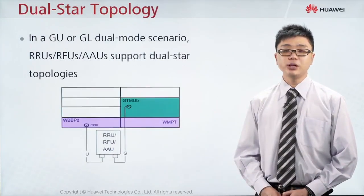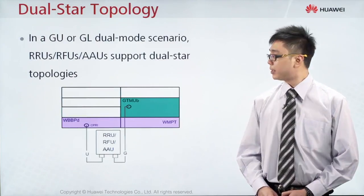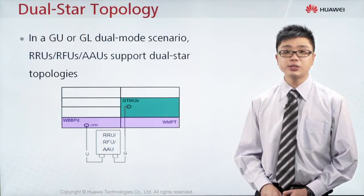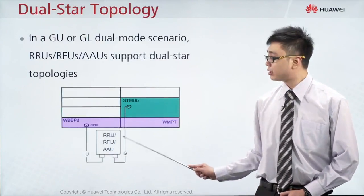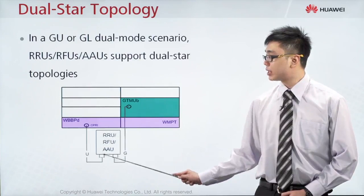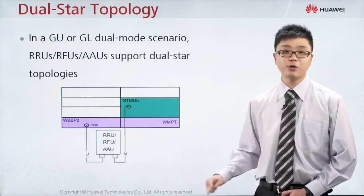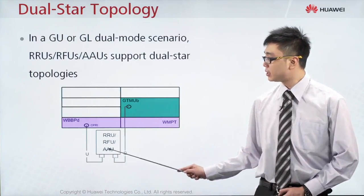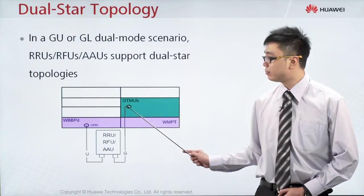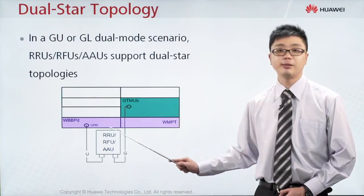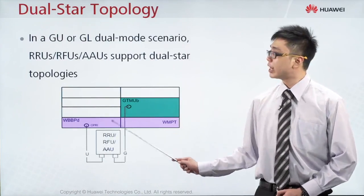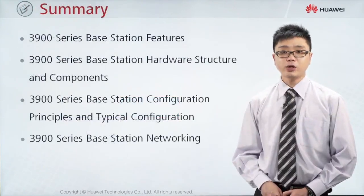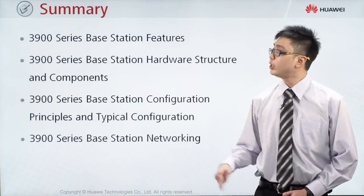The next type of connection is dual star. This topology is only applicable when using MBTS, where the RF unit supports more than one mode — for example, 2G and 3G. If they support both 2G and 3G together, the processing needs to connect to the 2G BBP board, which is the GTMU board, and then the 3G WBBP board. This type of connection is known as dual star topology.